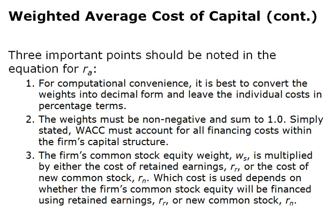Three important computation points: weights must be converted to decimals and costs left in percentage terms; weights must be non-negative and sum to 1 (100%); and the firm's common stock equity weight is multiplied by either the cost of retained earnings or the cost of new common stock, depending on whether the firm is financing through retained earnings or issuing new shares.